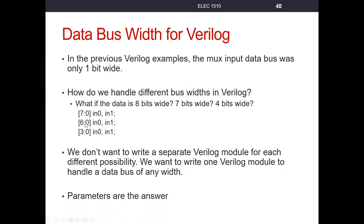We've sized signals before in Verilog. When we declare them and put the size to the left, we can specify how many bits are in that signal. So if we wanted to make the data eight bits wide, we'd say seven down to zero. But if we have different requirements — say a 32-bit bus, an 8-bit bus, a 16-bit bus — we don't want to write a separate Verilog module for each possibility. We want to write one Verilog module that can handle a data bus of any width.